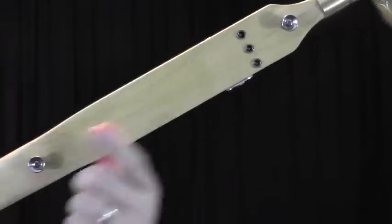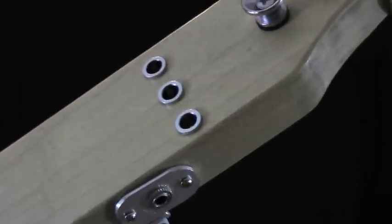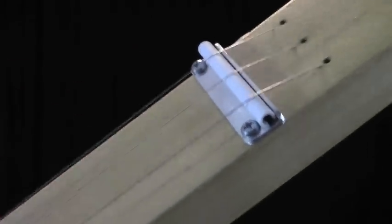On the back I put these two strap buttons to make it easier to play while standing. I also put these three string ferrules. The strings go through the body, over the saddle and bridge, then down towards the tuners.